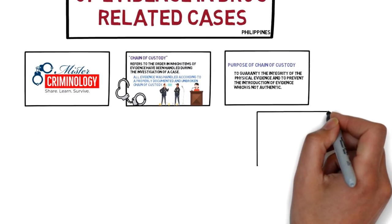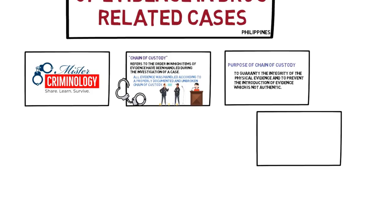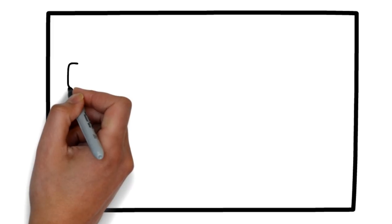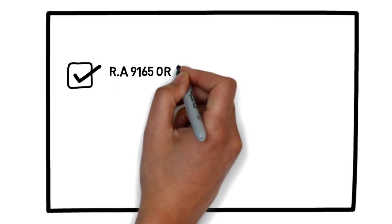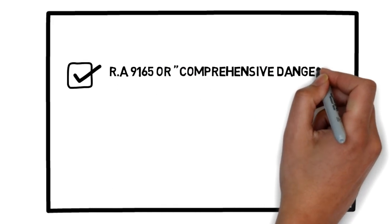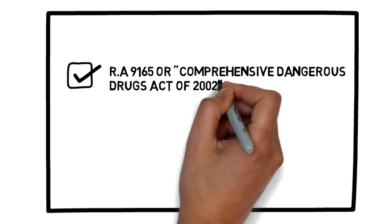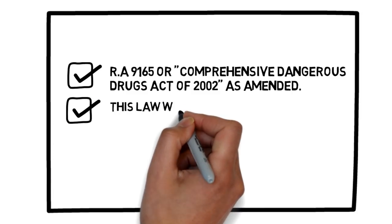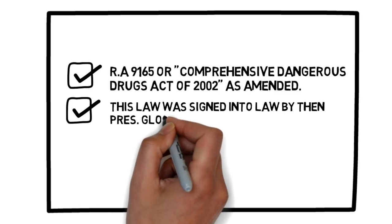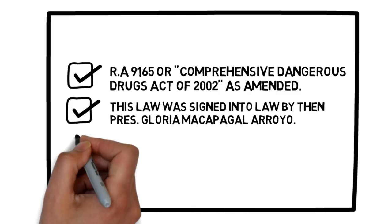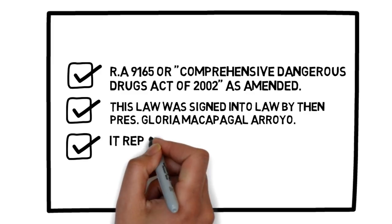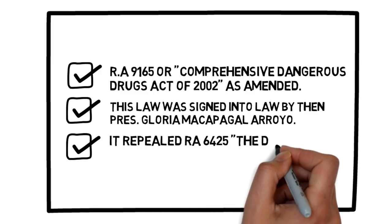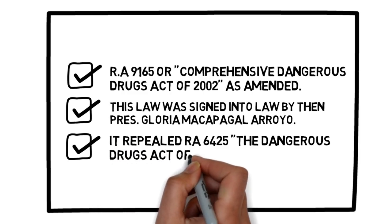Now we discuss the chain of custody of evidence in drug-related cases. The law that governs the prosecution of drug cases is Republic Act number 9165, or the Comprehensive Dangerous Drugs Act of 2002, as amended. This law was signed into law by then-President Gloria Macapagal Arroyo. It repealed Republic Act 6425, or the Dangerous Drugs Act of 1972.